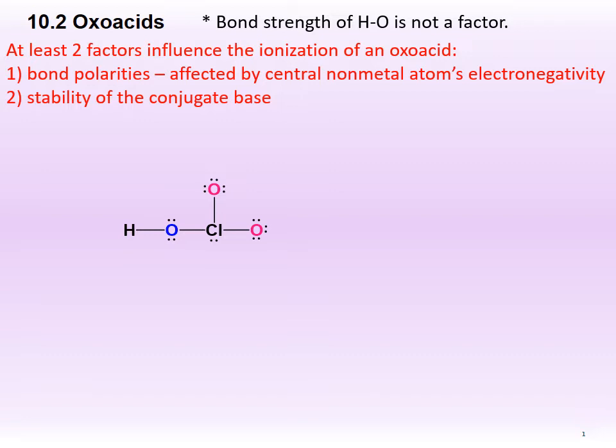We first work out chlorine's oxidation number or oxidation state. Let it be x. Hydrogen's oxidation number is positive 1, while oxygen's oxidation number is negative 2. We form an equation by adding up all the oxidation numbers of the atoms and equate them to 0, since chloric acid is neutral. Thus, 1 + x + (−2)(3) = 0. Solving for x, we get x = +5.